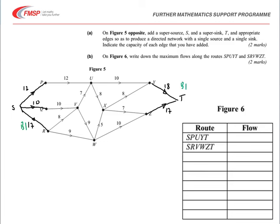The maximum flow along each of those routes, that's for SPUYT, which is along the top. We're looking for the smallest number on there, and we can see that that's given by that UY there, which is 10. So the maximum flow along there is 10. If we look at the route from SRVWZT, so SR is 17, then from R to V is 8, and then to W9, Z10, and T17. So the smallest of those is the 8, which gives us the maximum flow along there. And again, two marks for that B1 and B1.